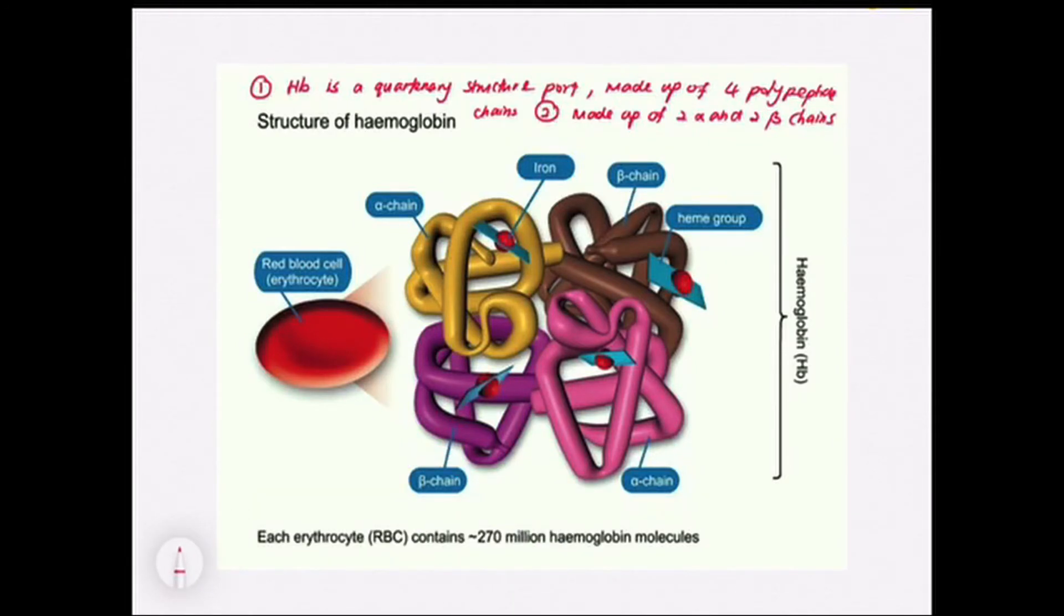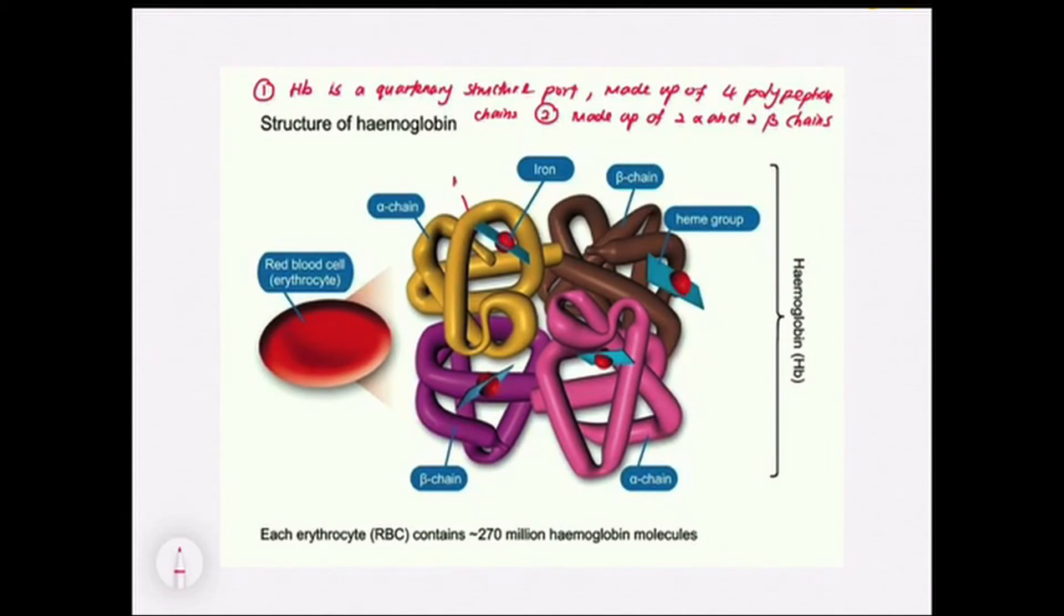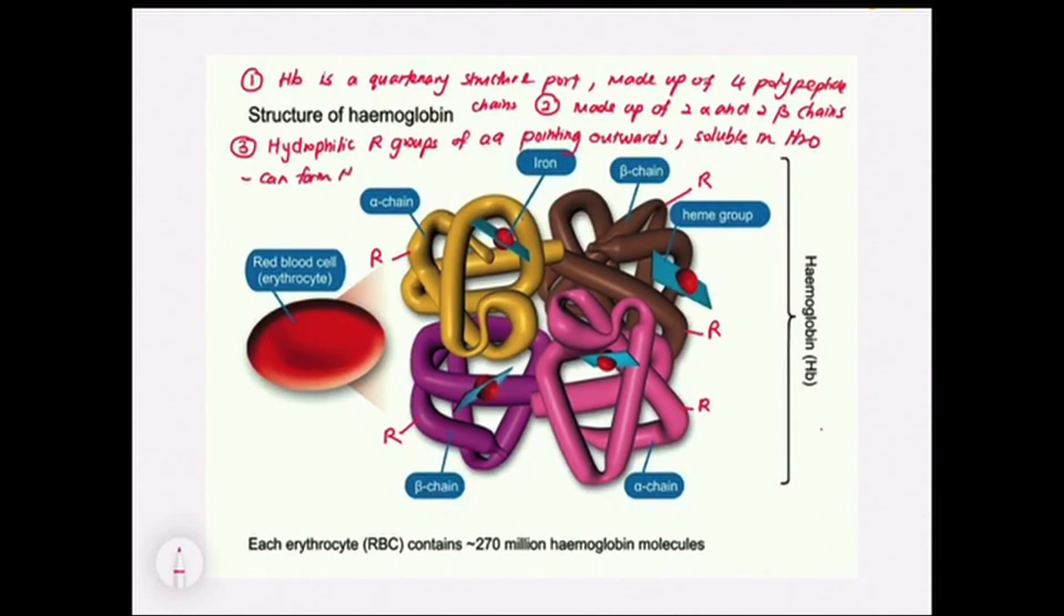Point number three, since we know that the whole hemoglobin is a globular protein with spherical shape, in order to fold the spherical shape, they definitely have hydrophilic R groups that are pointing outwards. Therefore, they are soluble in water as they can form hydrogen bonds with water.